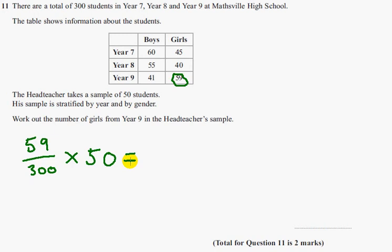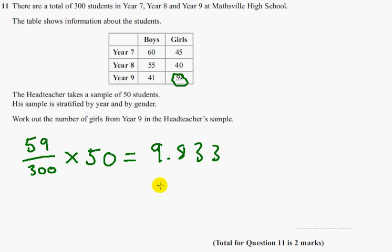And you get 9.833 of a student. Obviously you can't have that, so you're going to have to round that to 10 pupils — 10 girls from Year 9 in that sample.